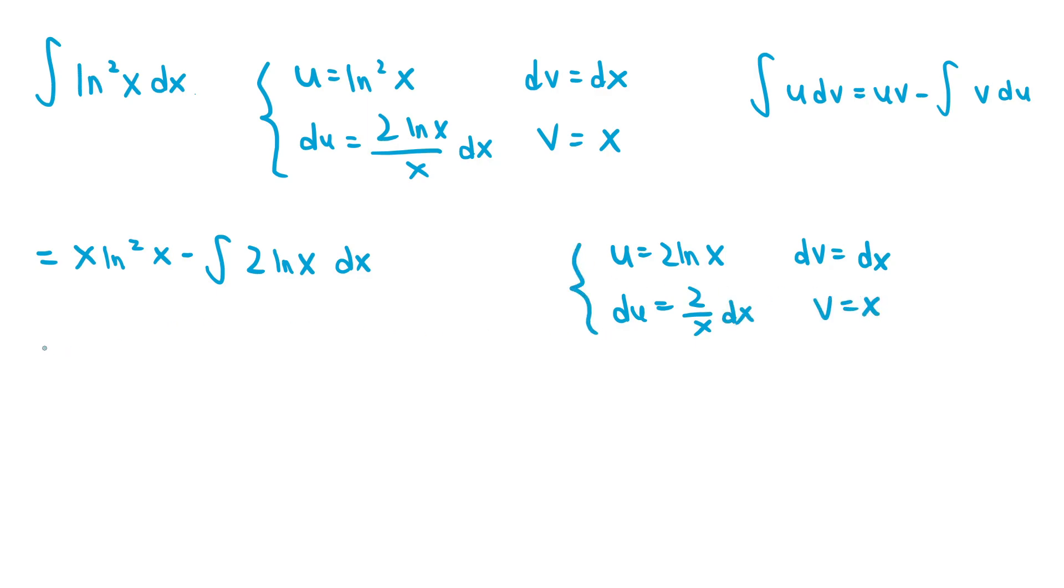The first part of the expression stays the same. So this is x ln squared of x minus, and we can replace the integral of 2 ln x dx with uv, which is 2 ln x times x. So this is 2x ln x minus the integral of v du.